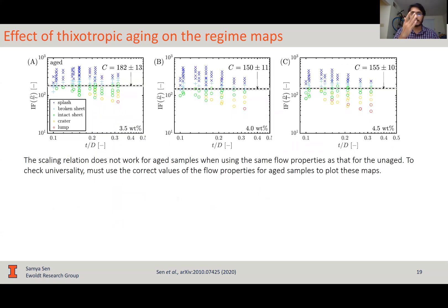This is because the scaling relation doesn't work for aged samples, since we are using the same flow properties over here as we used earlier for the unaged samples. So, to make this group universal, to be able to include the effect of thixotropic aging, we have to use the correct flow properties for the aged samples. Because as we know, as the sample ages, thixotropically, the yield stress viscosity, they change, they usually increase if they're thixotropic.